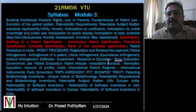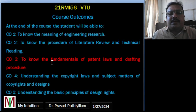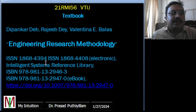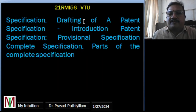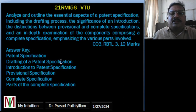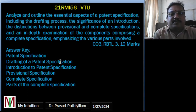Here I am covering the highlighted portion of the syllabus, which covers course outcome 3: to know the fundamentals of patent law and drafting procedure. The study material is available in the textbook mentioned in the syllabus. The syllabus covers specification drafting of a patent specification, introduction to patent specification, provisional specification, complete specification, and parts of the complete specification. The question is framed at Bloom's taxonomy level 3.